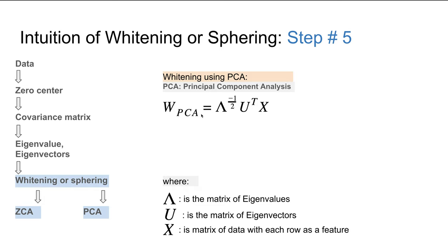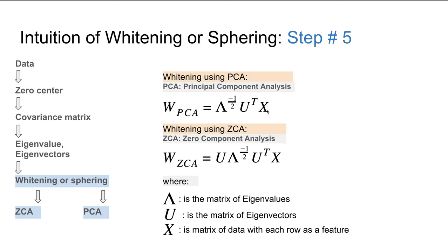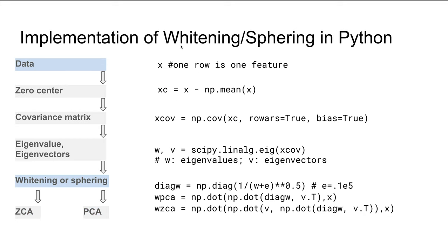To get the whitened dataset using PCA, the formula involves Λ^(-1/2) dotted with U (the eigenvector matrix) and the dataset. For ZCA whitening, the formula is: eigenvector dotted with the inverse square root of the eigenvalue matrix, dotted with the transpose of the eigenvector, dotted with the data.